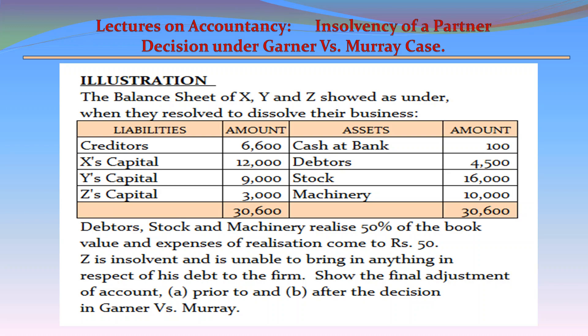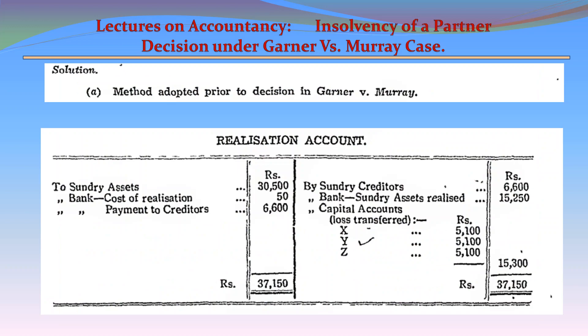Debtors, stock, and machinery realize 50% of the book value and expenses of realization come to Rs. 50. Z is insolvent and is unable to bring in anything in respect of his debt to the firm. Solution A: Method adopted prior to decision in Garner vs. Murray — Realization Account.